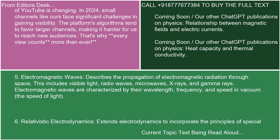5. Electromagnetic Waves: Describes the propagation of electromagnetic radiation through space. This includes visible light, radio waves, microwaves, x-rays, and gamma rays. Electromagnetic waves are characterized by their wavelength, frequency, and speed in vacuum — the speed of light.